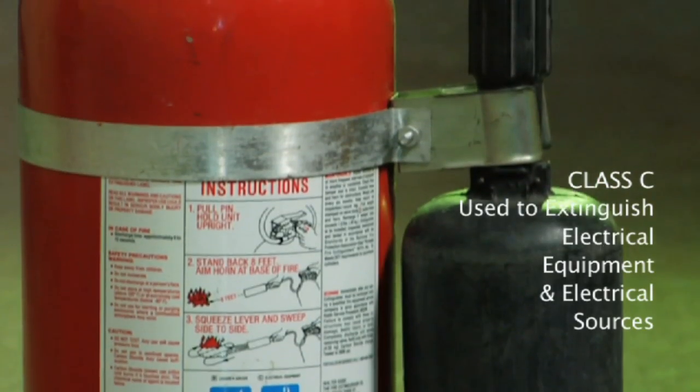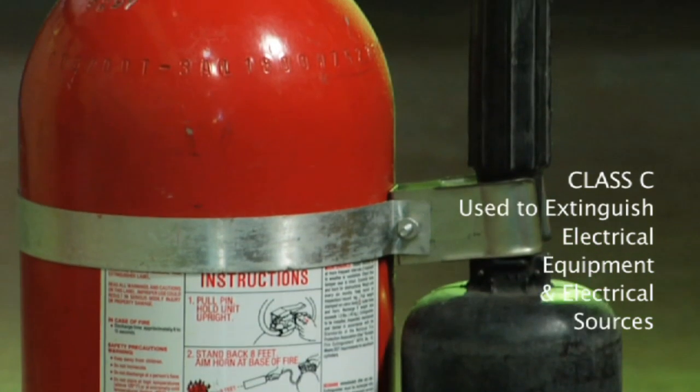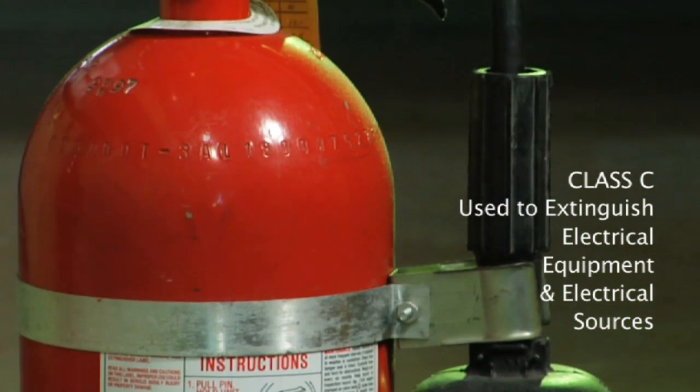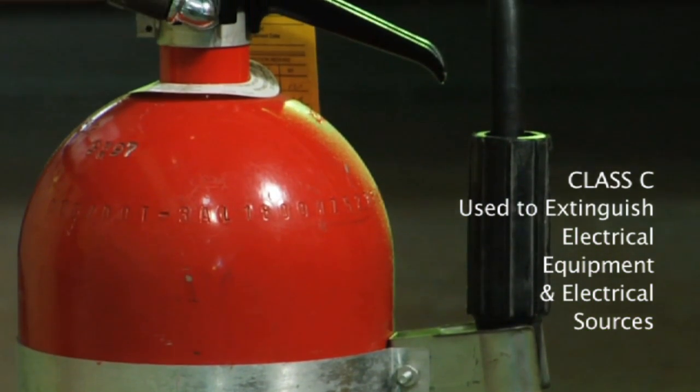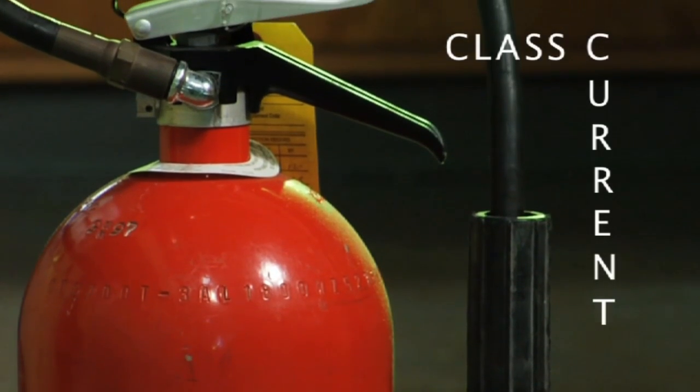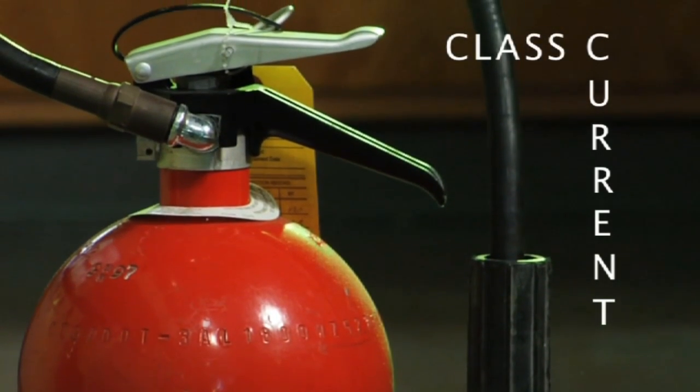Class C fire extinguishers are used to extinguish fires involving energized electrical equipment or an electrical source. Some people find it helpful to remember that Class C fires have an electrical current.